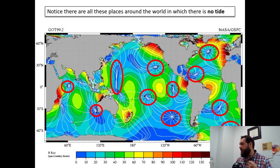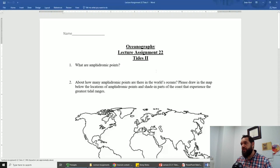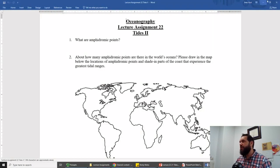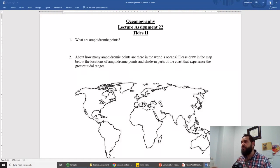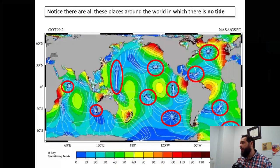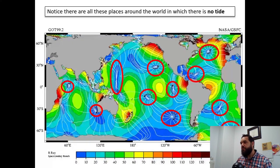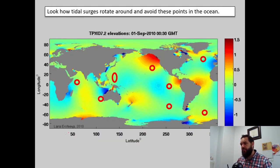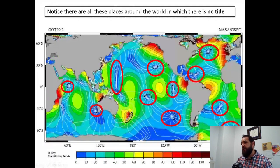There's your amphidromic points. One of the first things you have to do in your lecture assignment for today is say what amphidromic points are. Amphidromic points are just places on Earth — there's about 12 or 13 of these places where there is no tide, no tidal range. Then you have to kind of draw in where you find those amphidromic points on the map. There are eleven of them visible here, and actually more than that because there are some additional ones further down.